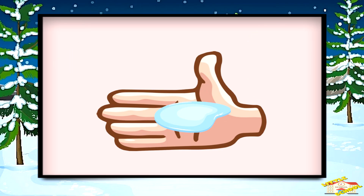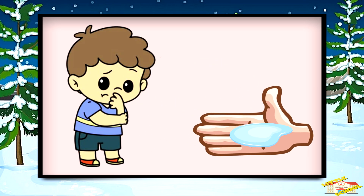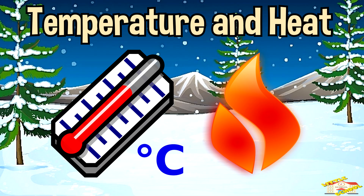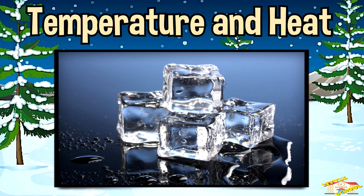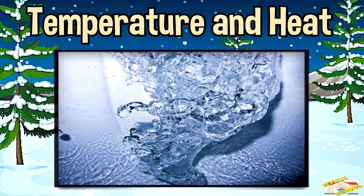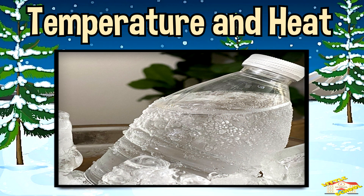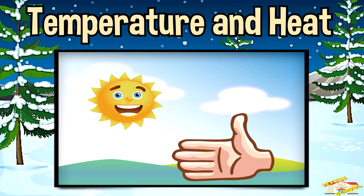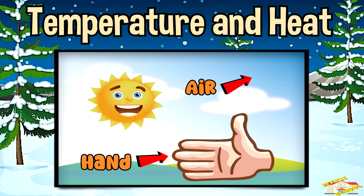So why does that happen? First, we need to talk about temperature and heat. Ice is just frozen water. Water freezes and becomes ice at zero degrees Celsius, or 32 degrees Fahrenheit. When the ice warms up because of the air, your hand, or sunlight, the heat makes the ice particles move faster.